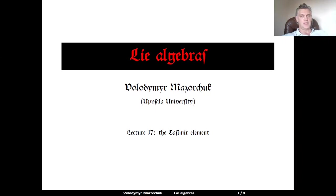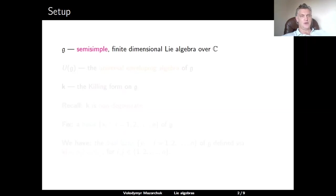Hello, and welcome to Lie Algebras. In this lecture, lecture number 17, we will talk about the Casimir element. Our usual setup is that we consider a semi-simple, finite-dimensional, complex Lie algebra G, and denote by U of G the universal enveloping algebra of G.